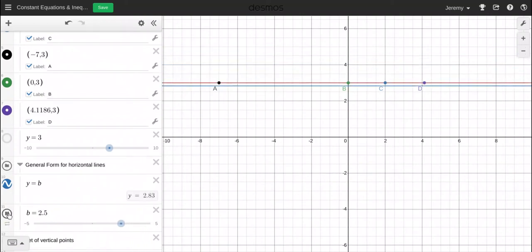And notice when I make this slider move, we have a horizontal line. I can pause it anywhere, like right there. And when we have y equals negative 1.88, we have a horizontal line that crosses the y-axis here at negative 1.88. If I drag this up, it goes up. And now notice the b is 3, and that's why it's coinciding with this line y equals 3.